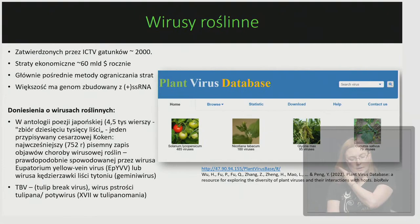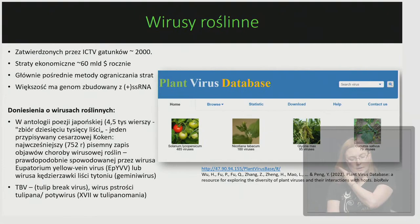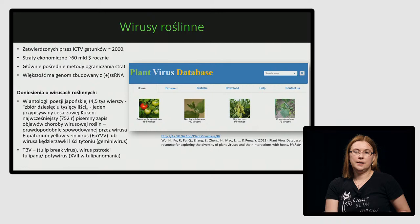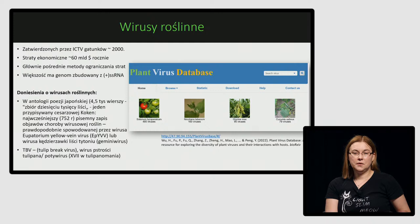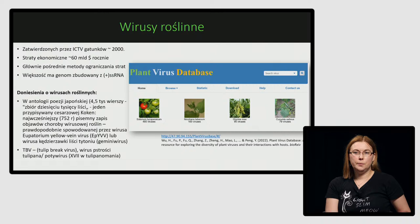Przechodząc do wirusów roślinnych – obecnie znanych jest ponad 10 tysięcy, natomiast zatwierdzonych przez Międzynarodowy Komitet Taksonomii Wirusów jest około 2 tysięcy gatunków. Wiadomo, że ta liczba to wierzchołek góry lodowej, biorąc pod uwagę ilość roślin – spodziewamy się, że wirusów roślinnych mogą być miliardy. Pierwsze doniesienia pojawiły się już w antologii poezji japońskiej w połowie VIII wieku, gdzie jeden wiersz przypisywany cesarzowej Kōken opisuje roślinę prawdopodobnie porażoną geminowirusem.